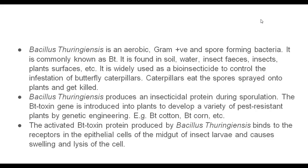They are introduced to Bacillus thuringiensis plants. Bacillus thuringiensis produces an insecticidal protein during sporulation — that is Bt-toxin. Bt-toxin is produced as a crystal body — that is endotoxin. This endotoxin is biodegradable. And this is the gene toxin we introduce into plants.